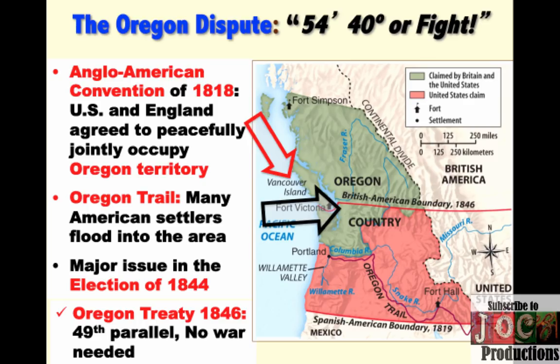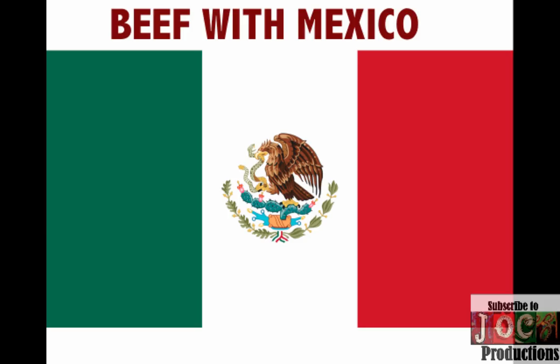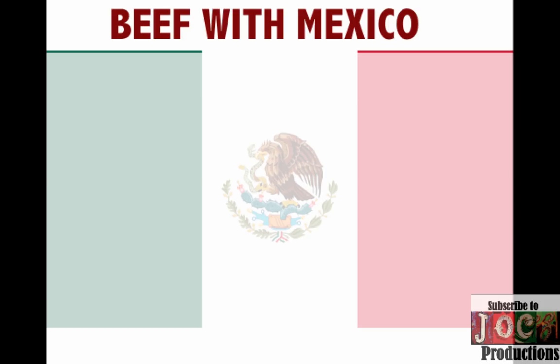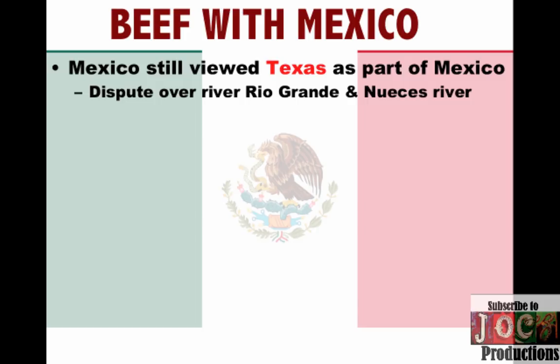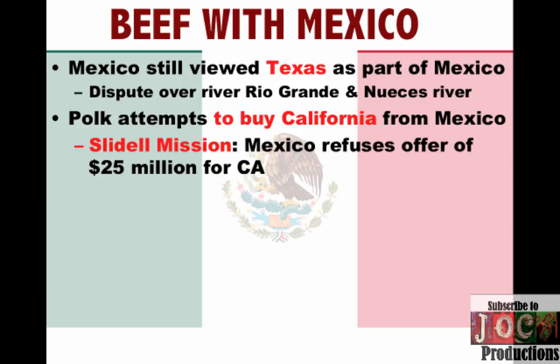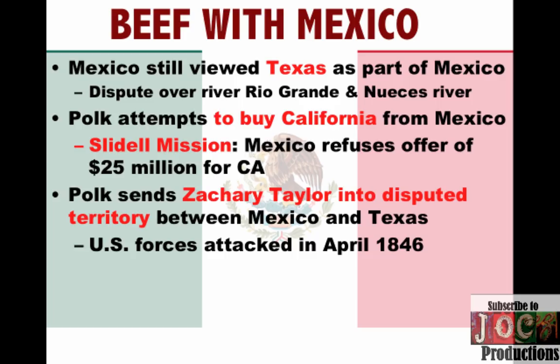There won't be a peaceful resolution with Mexico. Mexico still viewed Texas as part of Mexico — they don't recognize the Lone Star Republic. Santa Ana is very clear on this issue, and there's also a dispute over the boundary: is it the Rio Grande or the Nueces River? Polk attempts to buy California from Mexico, but relations between the two countries are strained. He sends his envoy John Slidell to Mexico trying to buy California for $25 million, but Mexico refuses to even consider the offer. Polk then sends Zachary Taylor into the disputed territory between Mexico and Texas, and U.S. forces are attacked in April of 1846, ultimately leading to the Mexican-American War, which will last a little under two years.